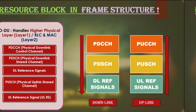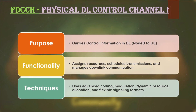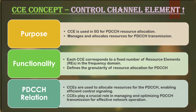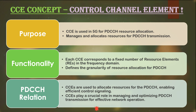PDCCH — Physical Downlink Control Channel — carries the downlink control information, like the information for scheduling and resource grant to the UE. PDCCH carries information about resources which need to be allocated to the UE. PDCCH can have one or more CCE — Control Channel Elements — depending on the aggregation level used. In 5G NR, higher bandwidth and spectrum for heavy broadband services are supported.